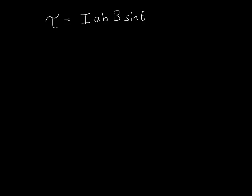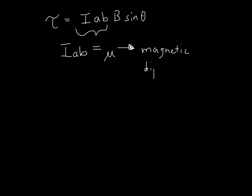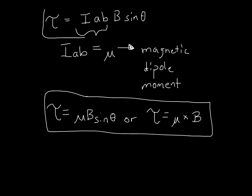This is our torque of a wire loop in a magnetic field. The first term — current times area times B — is so important and used so often that I times A, the current times the area of your loop, has a special name: we call it μ, the Greek letter mu, which stands for the magnetic dipole moment. So you may see this torque equation written as tau equals mu times B times sine of theta, or in shorthand, tau equals mu cross B.